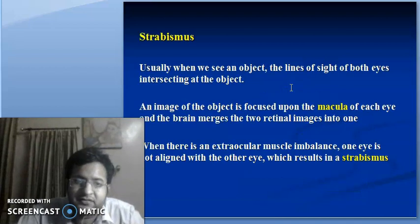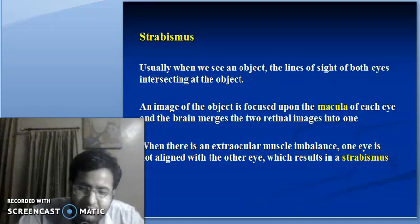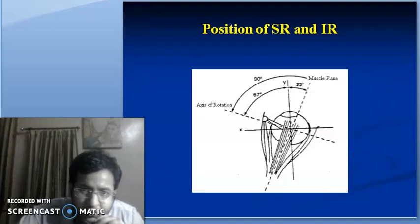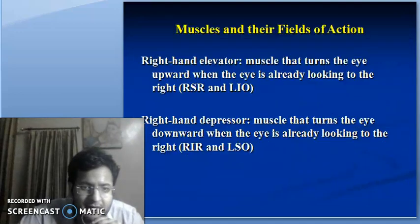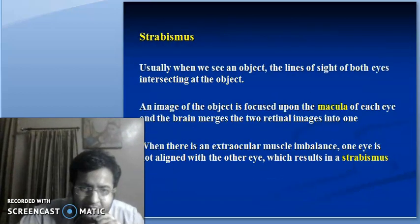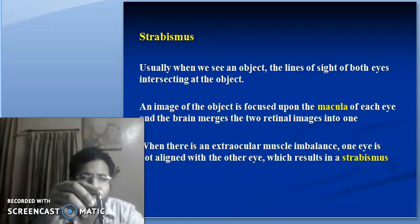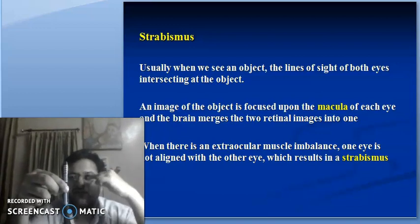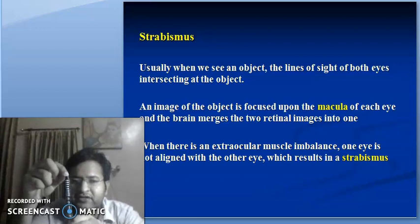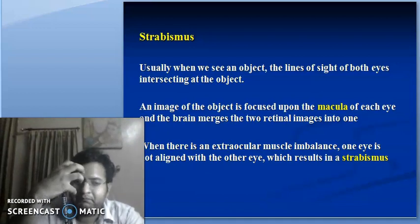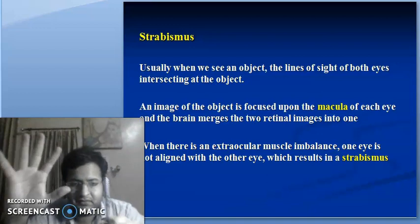So what is strabismus? You have all studied in the previous lecture the tests, muscles, and anatomy. Now we move to the clinical aspect of strabismus. Usually when we see an object, the line of sight of both eyes will be intersecting on that object, and the image forms at the fovea of both retinas — that is, in the macular area of both retinas.